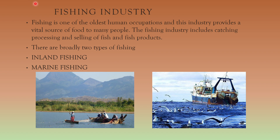The fishing industry is one of the oldest human occupations and provides a vital source of food to many people. It includes catching, processing, and selling of fish and fish products. There are broadly two types of fishing: inland fishing, practiced in streams, rivers, lakes, ponds, and paddy fields, where common varieties include trout, sturgeon, and carp; and marine fishing, practiced in seas and oceans, where common varieties include cod, herring, halibut, sardines, and mackerel.